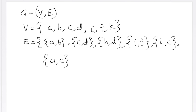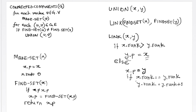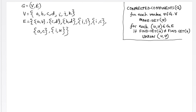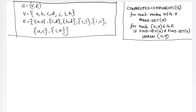The task is to find out the components of this graph using this particular function named Connected Components. Here is our Connected Components function and here is our graph. We will now use our Connected Components function to find out the components from this given graph. In the very first stage of this algorithm, it says to apply makeset operations for each of the vertices of the graph. When we use the makeset function, we will create a rooted tree for each of the vertices of the graph.